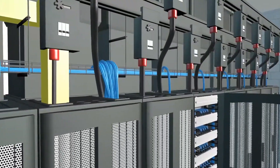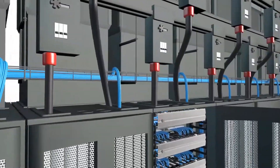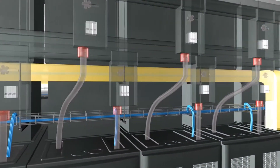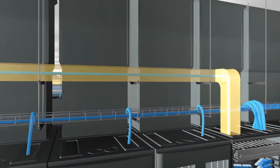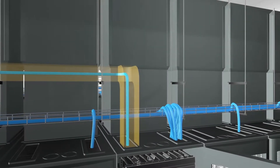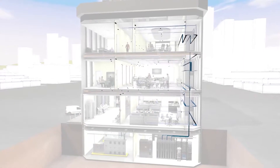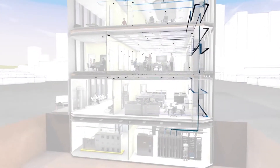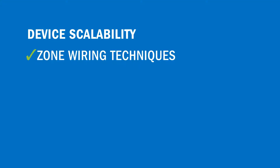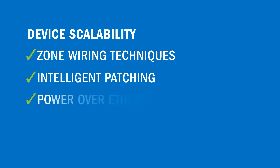The first step of versatile physical layer connectivity is network flexibility. It's important to address your ability to manage change and whether your cabling infrastructure can adapt to new technologies. Other considerations include your expectation for device scalability and your balance of wired versus wireless connectivity. This can be done through zone wiring techniques, intelligent patching, and enabling edge devices with Power over Ethernet.